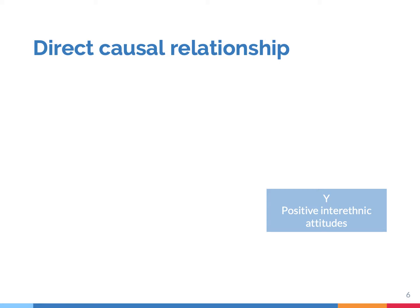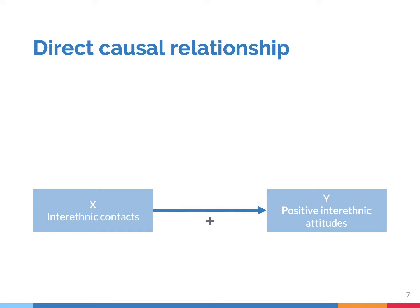Consider the following example. Suppose we are interested in the attitudes people have towards other ethnic groups. This is the dependent variable Y, the outcome we want to explain. We can highlight it in a box. Now suppose we have a theory that argues that people's interethnic attitudes become more positive when they develop more interethnic ties. We can visualize the independent variable, interethnic contacts, then draw an arrow. The arrow shows the direction of the causal relationship from X to Y. The plus symbol indicates a positive relationship.